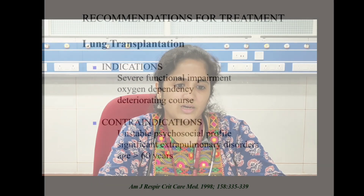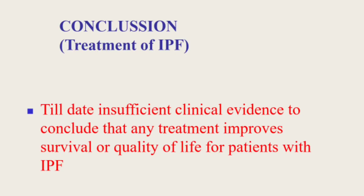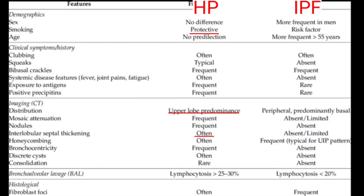We don't yet have a treatment that significantly improves quality of life or survival in IPF, but we can control inflammation and fibrosis. Hypersensitivity pneumonitis (HP) is another important ILD — especially in India, an agricultural country — and is often confused with IPF. The key difference is that HP is treatable and reversible with treatment, while IPF is a progressive fibrotic disorder. HP is suggested by exposure to farms, birds, or organic matter. On CT, HP shows upper lobe predominance and more nodules, unlike IPF which shows lower lobe honeycombing and fibrosis.